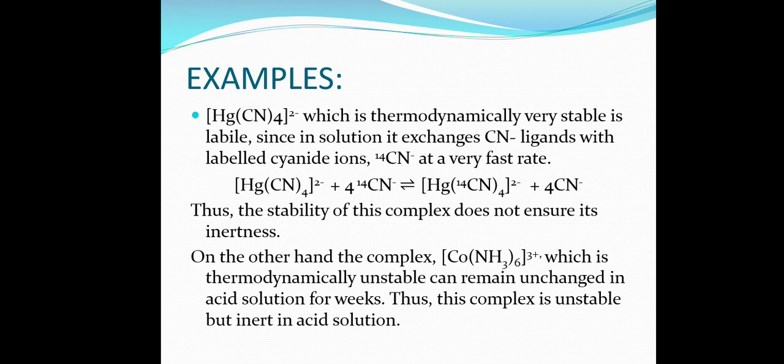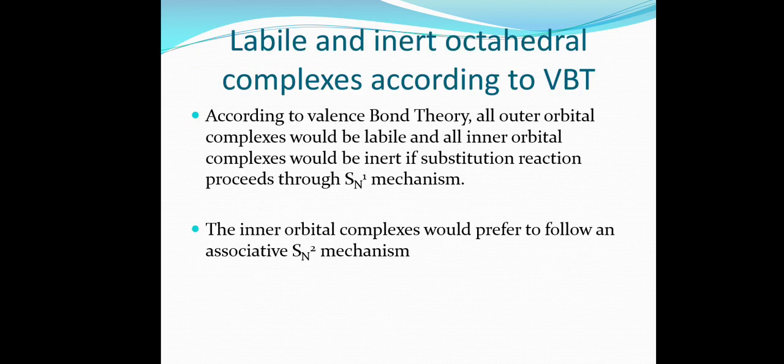There are two basic approaches to explain lability and inertness of octahedral complexes. The first is through valence bond theory (VBT). Two important points: first, according to VBT, all outer orbital complexes would be labile and inner orbital complexes would be inert if substitution proceeds through an SN1 mechanism; second, inner orbital complexes would prefer an associative SN2 mechanism.